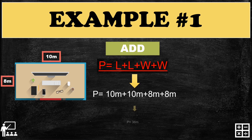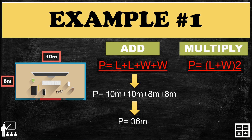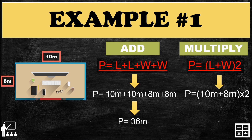Adding 10 + 10 + 8 + 8 gives you 36 meters. Using the multiply formula, substitute length = 10 meters and width = 8 meters: 10 + 8 = 18, then multiply 18 by 2, which also gives you 36 meters. You can choose whichever method is easier for you.